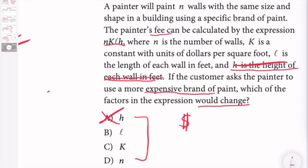B is L. L is the length of each wall in feet. The length would not change if we used a more expensive brand of paint.